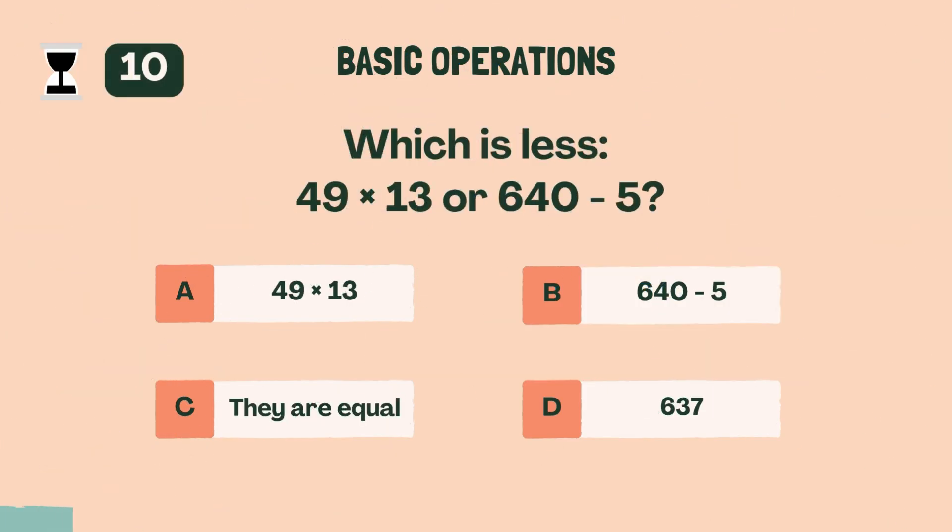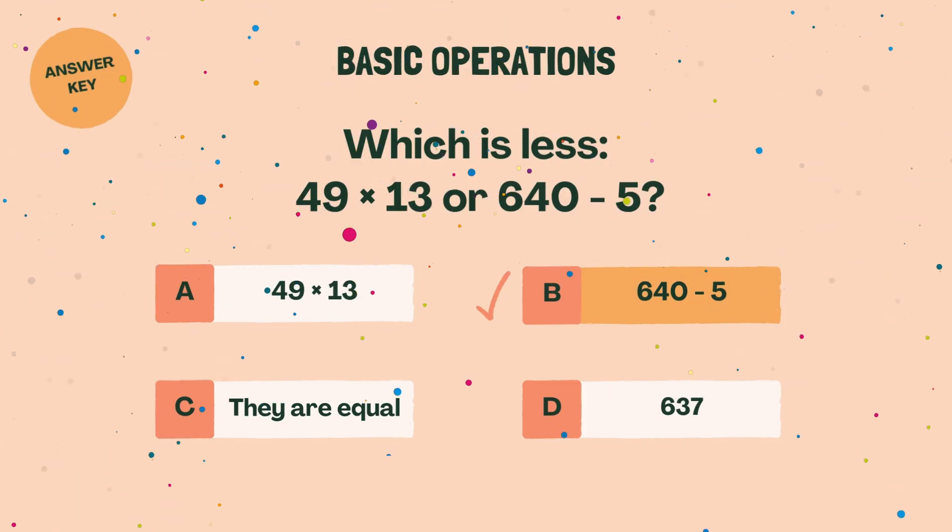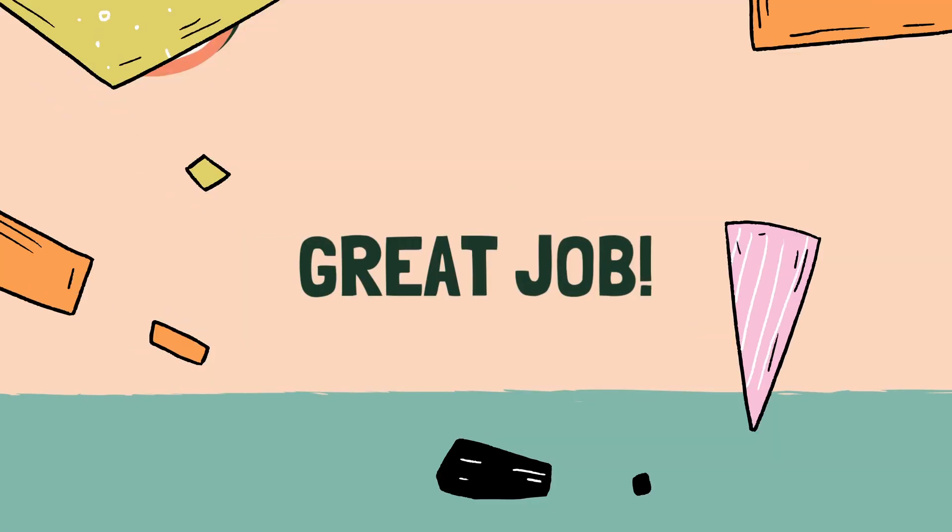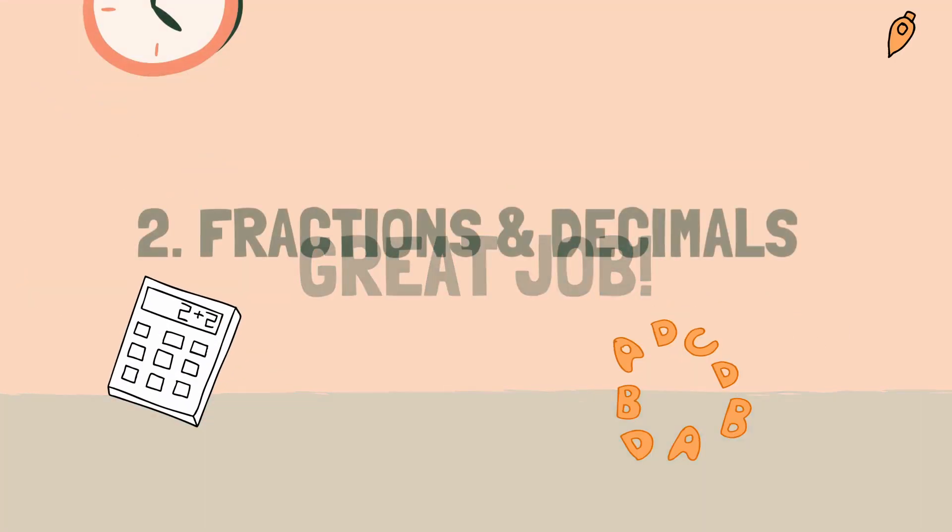Which is less, 49 times 13 or 640 minus 5? B, 640 minus 5. Great job. Let's move on to the next category.